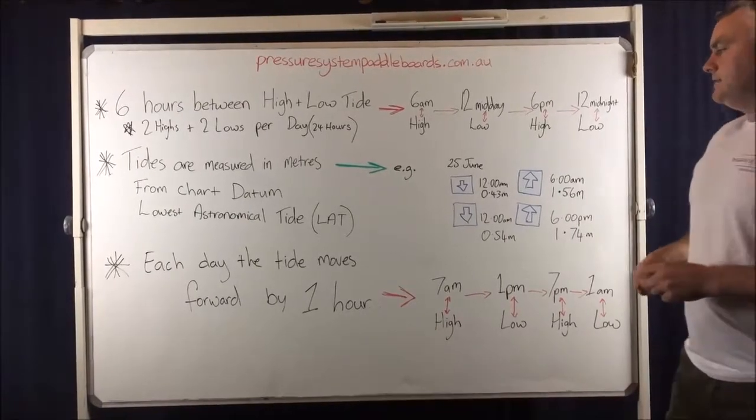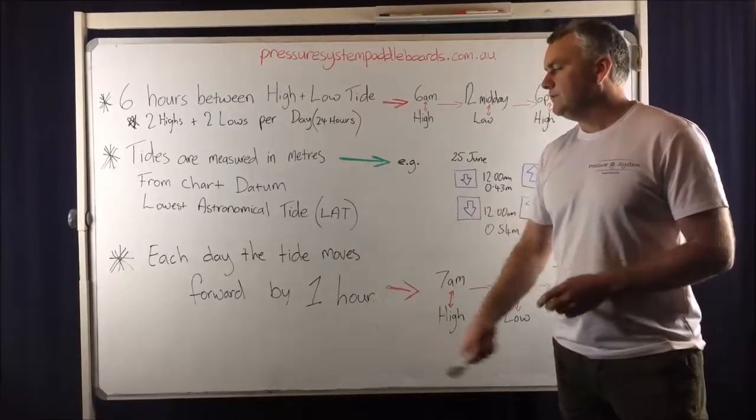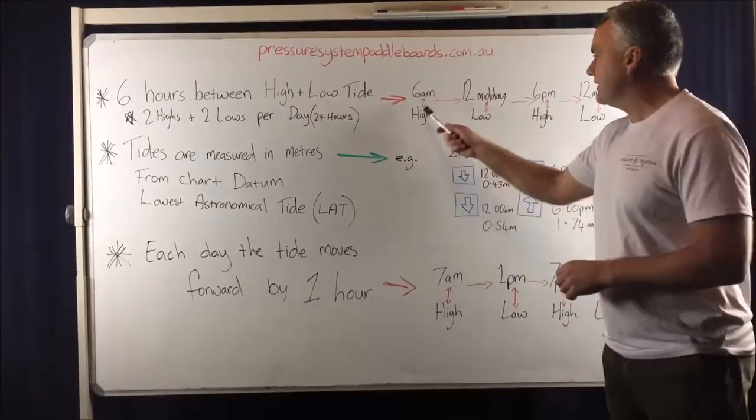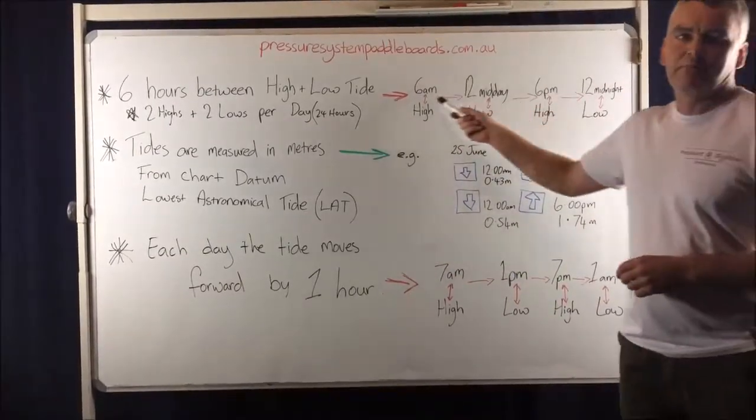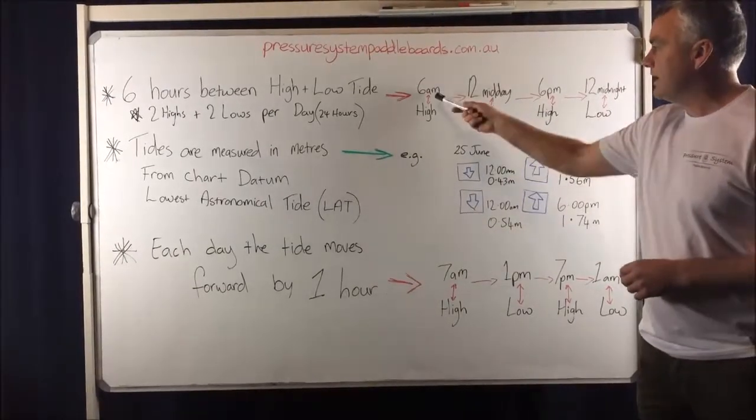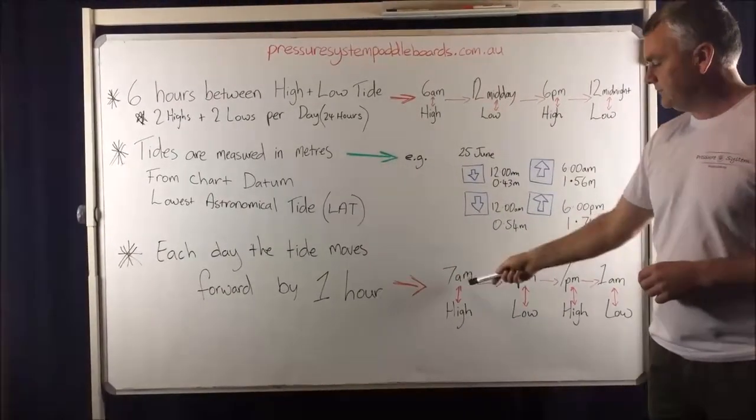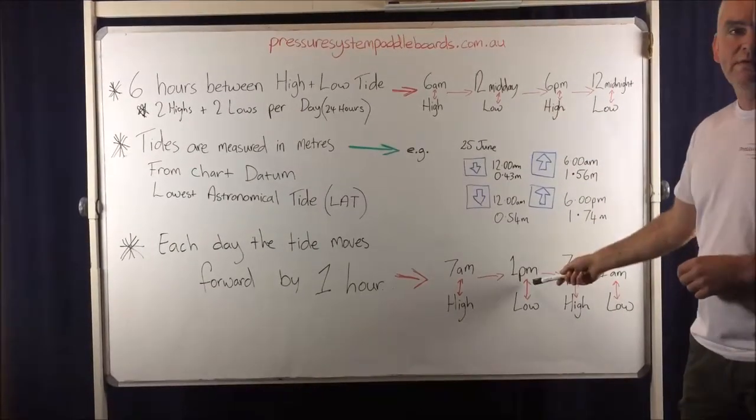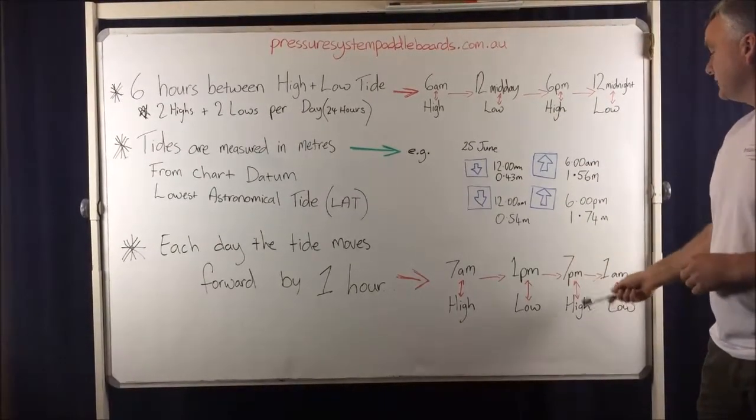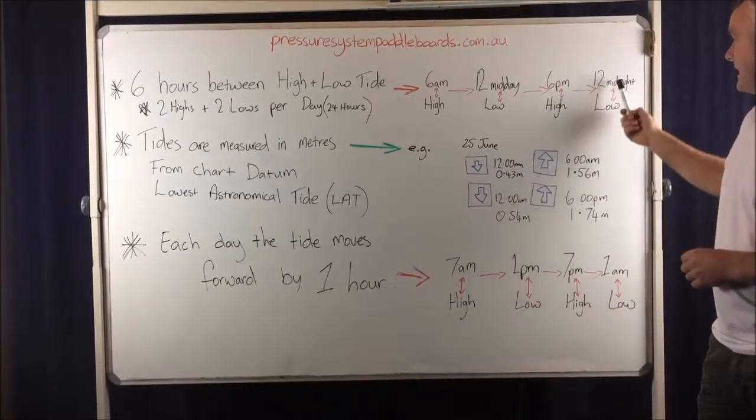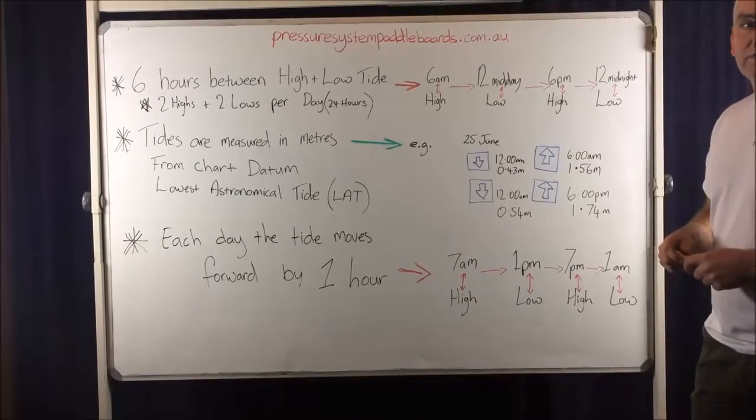Now each day the tide moves roughly one hour forward. So if we're working off this as our base guide, the following day high tide would be one hour on, one hour forward. So it would be 7am. Low tide would be one hour forward, so 1pm just after lunch. High tide would be 7pm, one hour forward of 6pm. And low tide would be 1am, one hour forward of 12 midnight. It varies because this isn't precisely six hours. It does vary a bit.